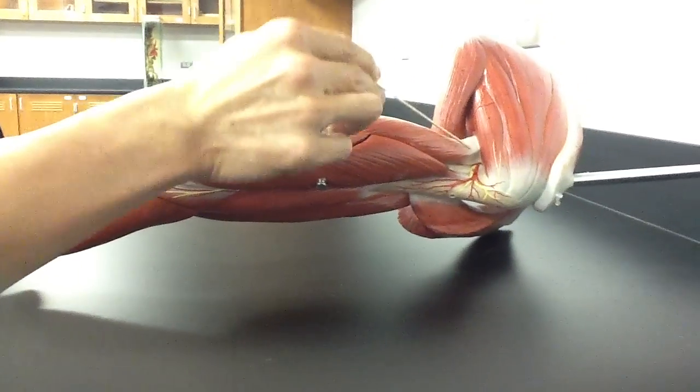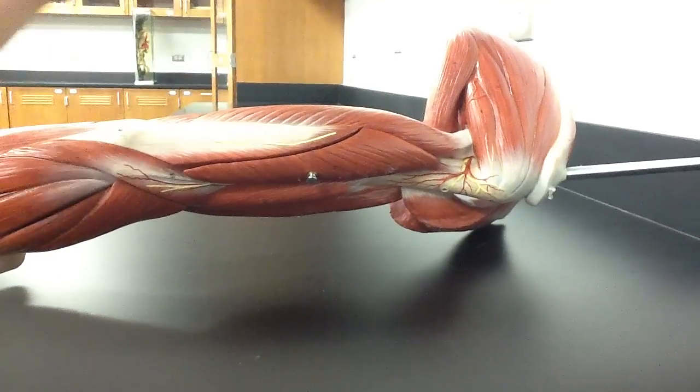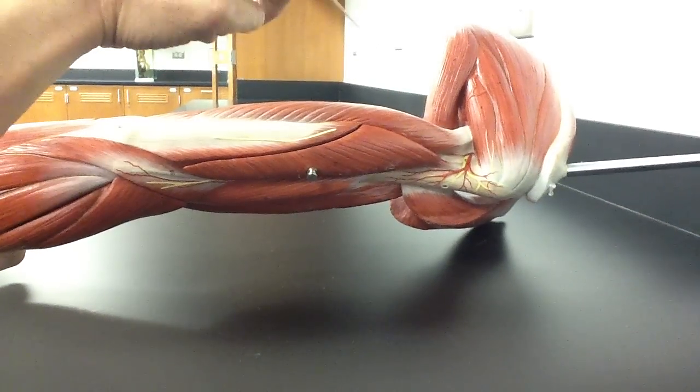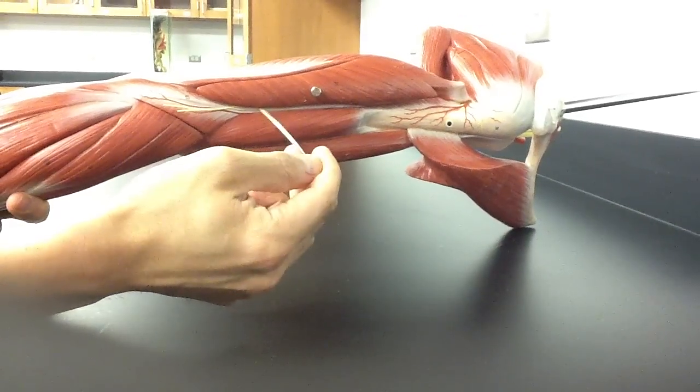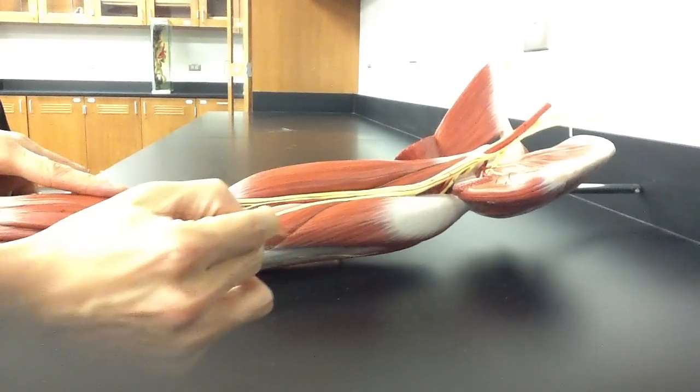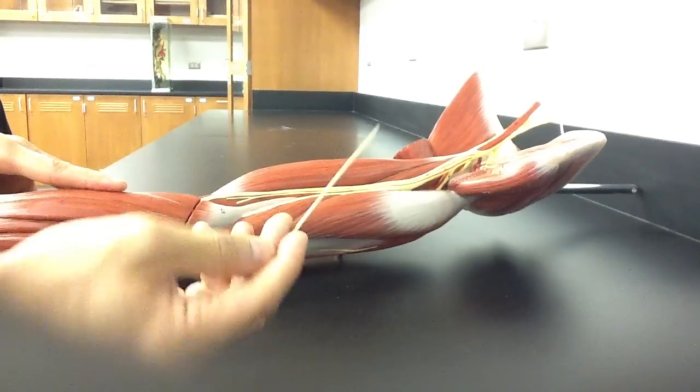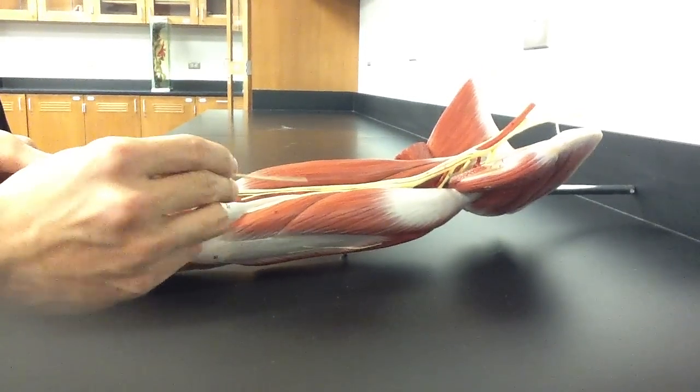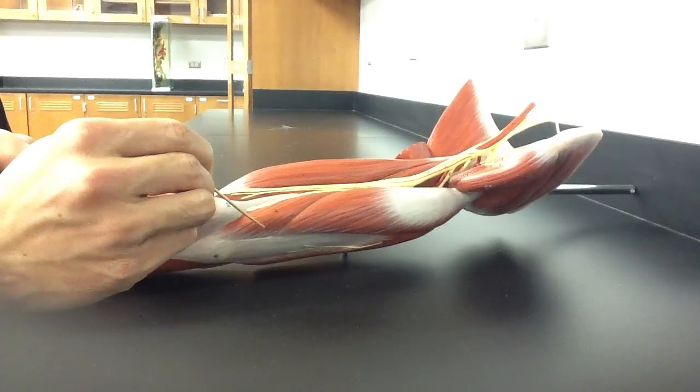Once you're in the long head, you get orientated by going laterally or medially, and those are the two other heads. Triceps brachii, long head. Triceps brachii, lateral head. And then right here is just this little slip of fibers here that looks pretty small, but on a cadaver, it's actually a little bit larger. This is the triceps brachii, medial head.